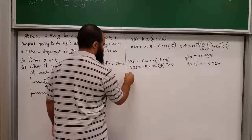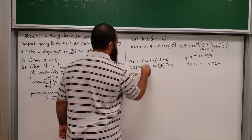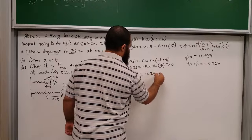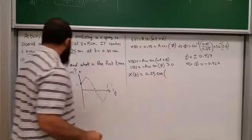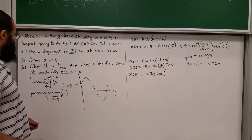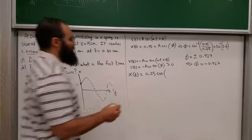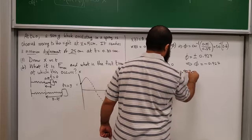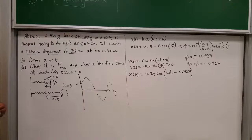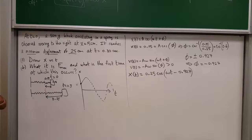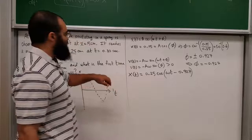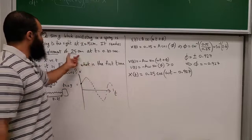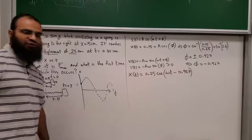So x(t) = 0.25·cos(ωt − 0.927). We still need to find ω. We don't know the period directly, so we use the condition at t = 0.3 s: x = 0.25 = 0.25·cos(0.3ω − 0.927). Dividing both sides by 0.25 gives cos(0.3ω − 0.927) = 1.